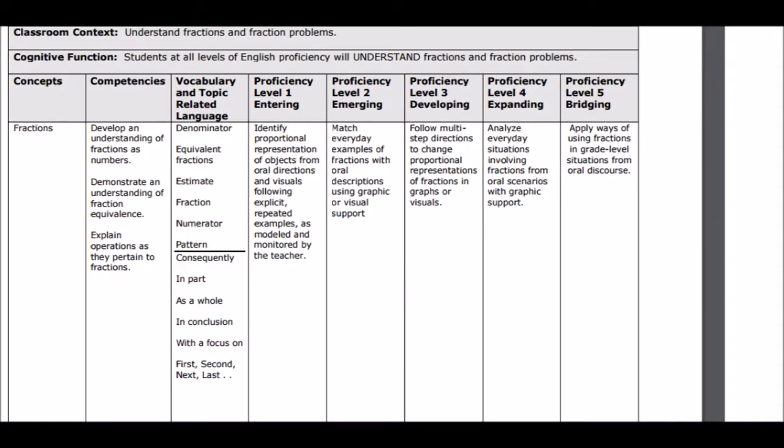This chart gives me an overall look at what the language proficiency levels — from one through bridging — are going to look like for a third grade student learning fractions. Now we have the overall picture, but what do we do specifically for Paola? What is she going to do in listening, speaking, reading, and writing? In order to not make this video too long, I'm going to specifically look at writing — how we're going to differentiate instruction for Paola in the area of writing in math.